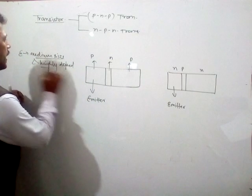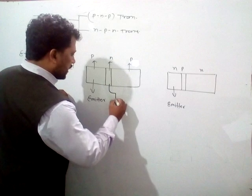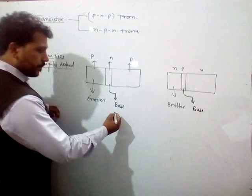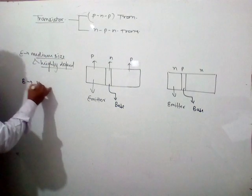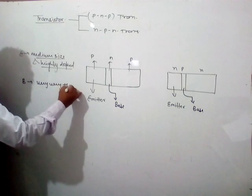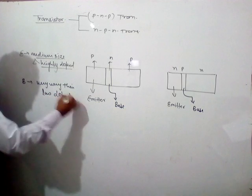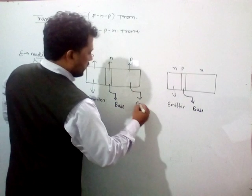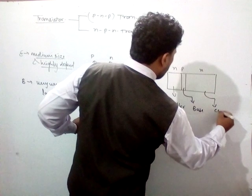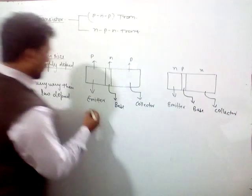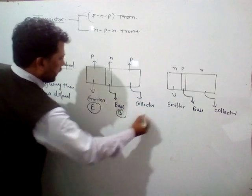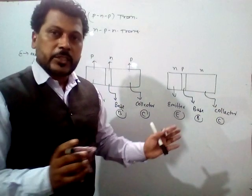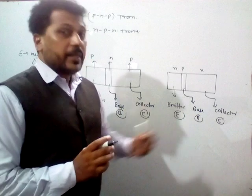The second region is the base. It is a very, very thin and low doped region — minimum doping. And the last region is the collector. It collects the charge carriers transmitted from the emitter region via the base.